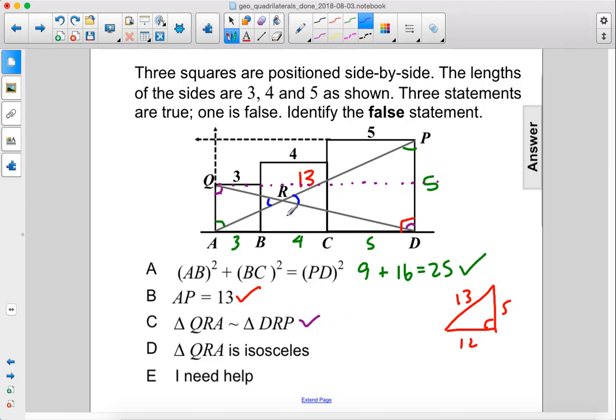Now finally, triangle QRA is isosceles. This is not true. So while this length here is 13, this length here is more like 12.4 because this length is 3. So we have a right triangle with 3, 12 and 13.